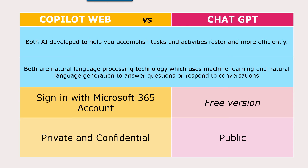The difference — highlighted in yellow — is that with Copilot on Edge, we sign in with our Microsoft 365 account, which means that what we're searching, using, and discussing with Copilot is private and confidential. Whereas with ChatGPT, when you use the free version, it's public.